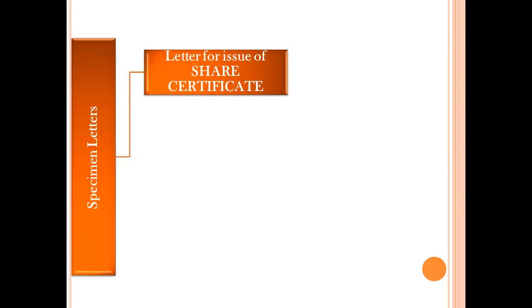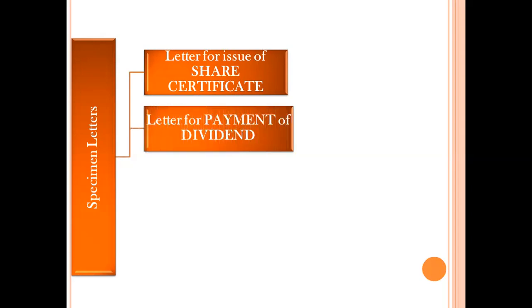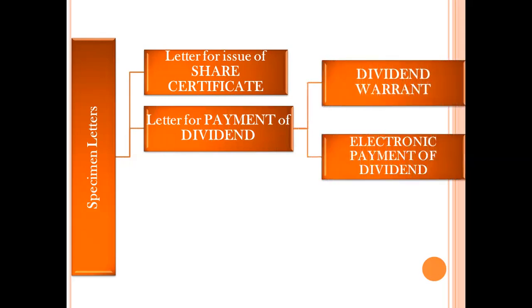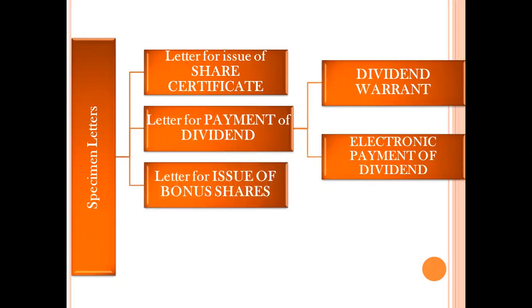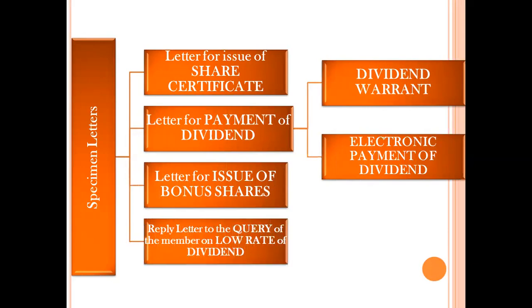The four specimen letters are: first, the letter for issue of share certificate; second, the letter for payment of dividend, which includes two letters — the dividend warrant and the electronic payment of dividend; third, the letter for issue of bonus shares; and fourth, a reply letter to the query of a member on a low rate of dividend. Our focus for today will be the first letter — letter for issue of share certificate.